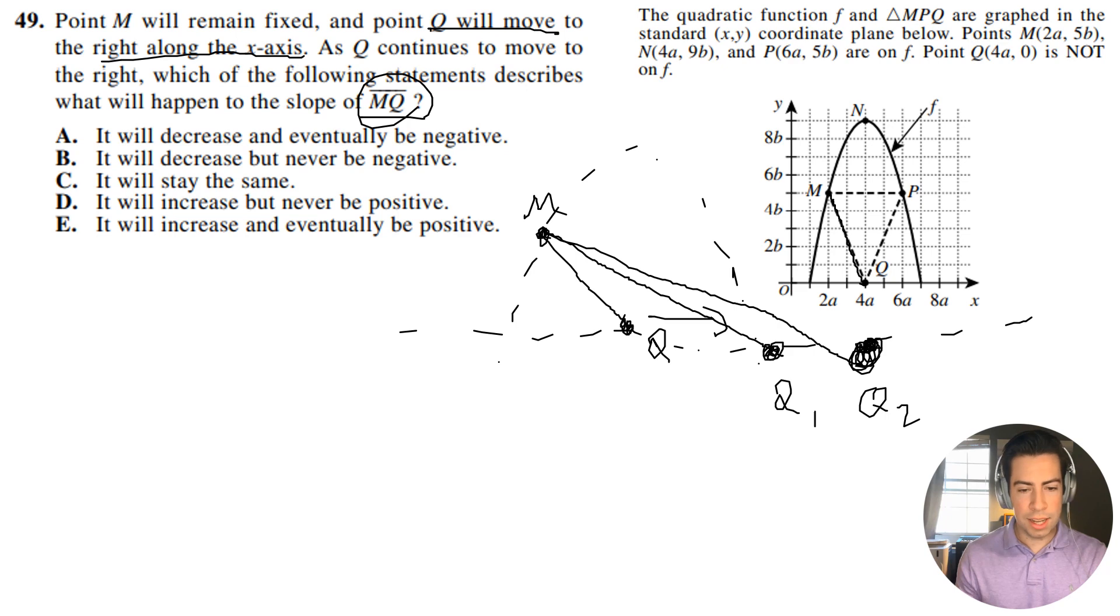So what this means is that, first of all, it's pointing down, like it's going in this direction. So the slope is always going to be negative. Number one, it must be negative. And it's never going to become positive because no matter how far I stretch it this way, it's still going to be pointing down. It's going to be negative.